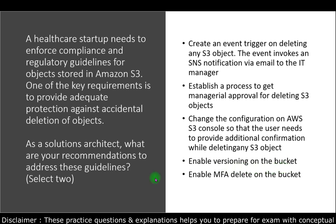Option four — enable versioning on the bucket — is correct. Versioning means that when an object is deleted or modified, it is not permanently removed or overwritten. Instead, the old version is kept with its original ID and the updated version gets a new ID, so you can always go back and restore an earlier version. Option five — enable MFA Delete on the bucket — is also correct, as it requires secondary authentication before objects can be permanently deleted. These two are the correct answers.